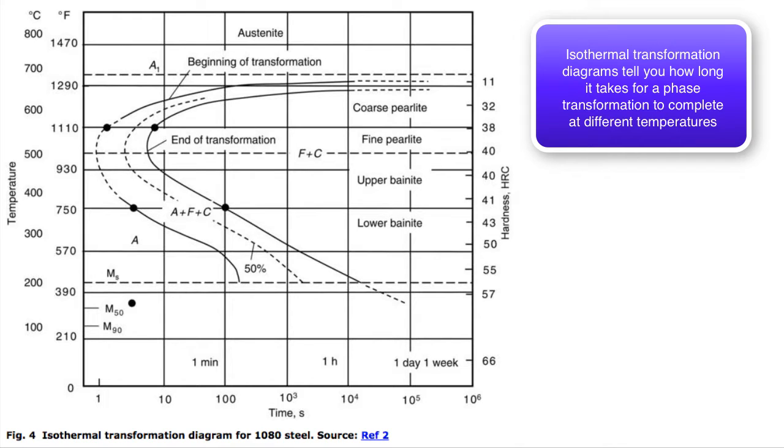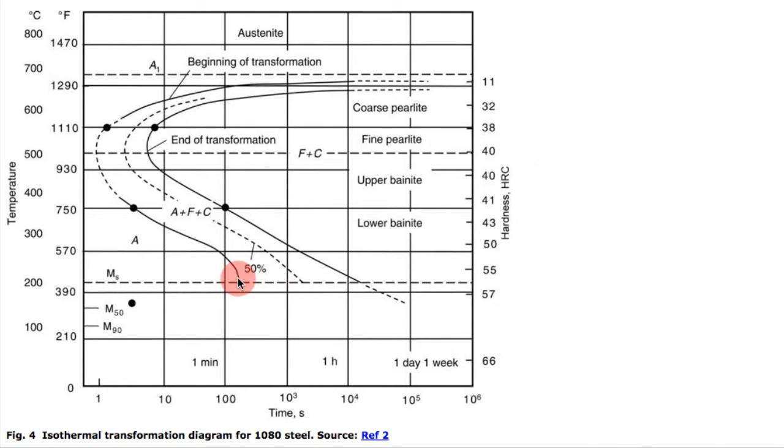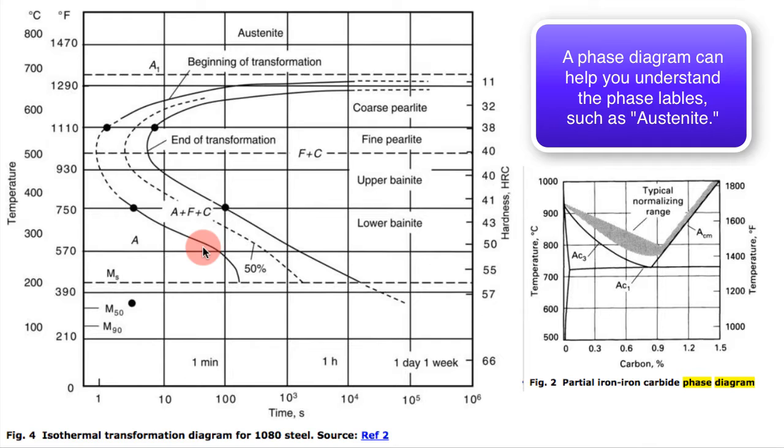What you see here is temperature on this axis and time on this axis, and in the middle here is essentially a map of different boundaries where a transformation from one phase to another begins and ends.